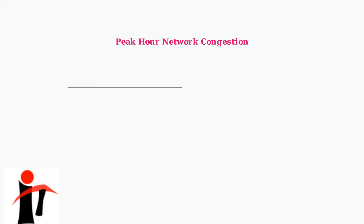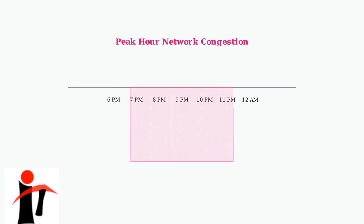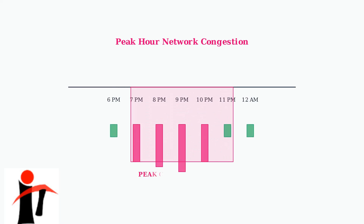Network congestion during peak hours from 7 to 11 p.m. is another major cause. During these times, too many users are competing for the same cell tower capacity, causing slowdowns or complete connection failures, even though your device shows a strong signal.